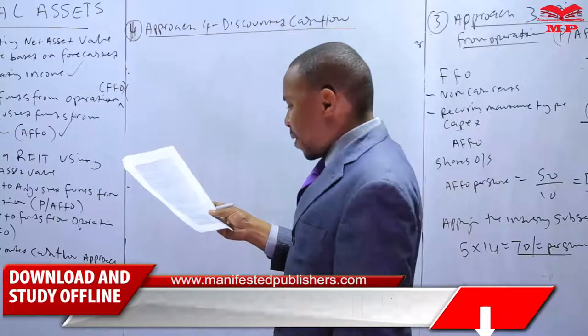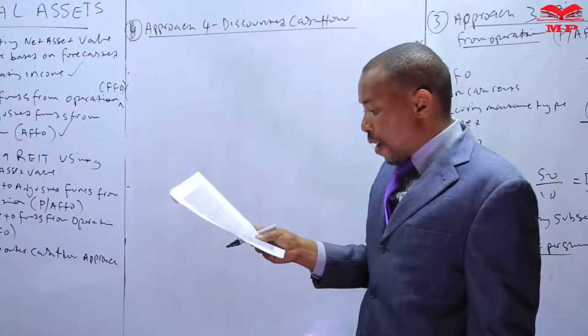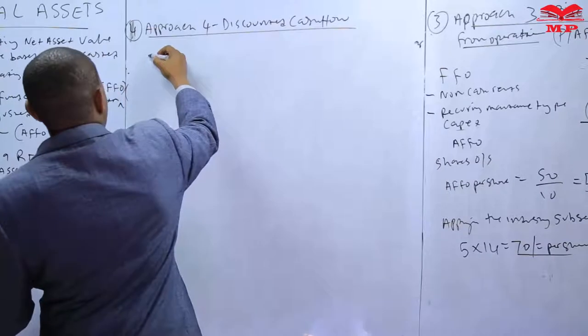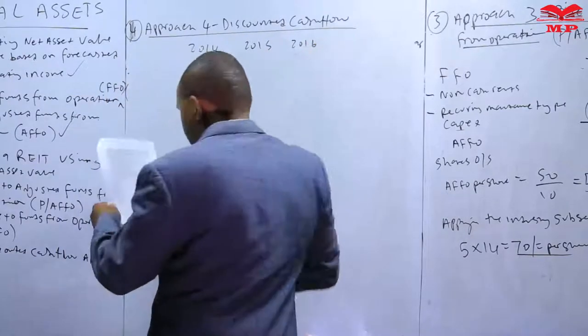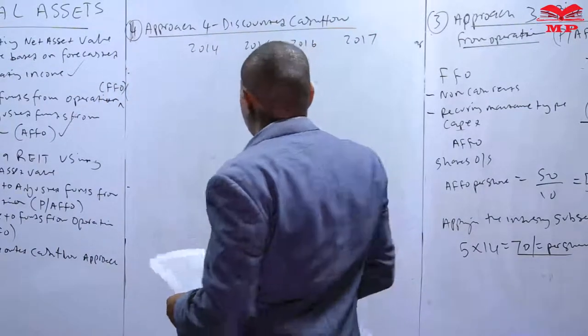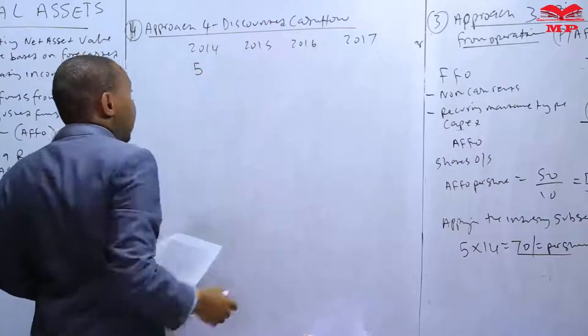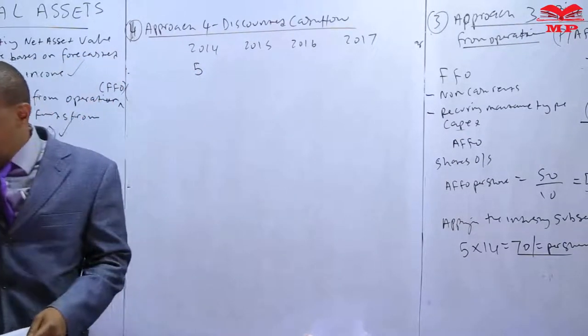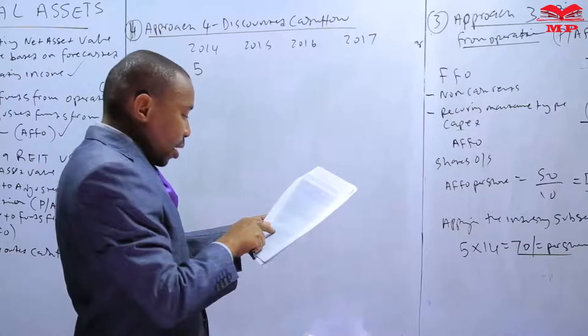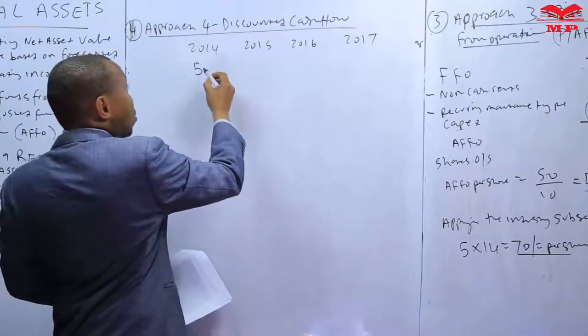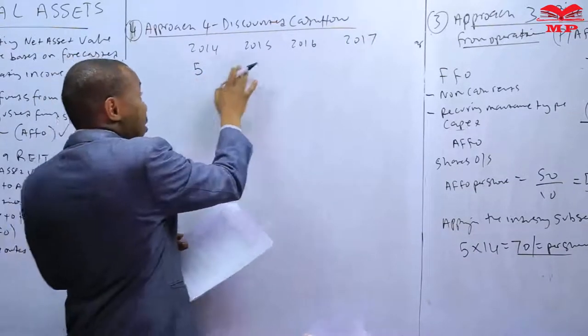We can see that we have the dividend per share in 2014 as 5 shillings and there is a growth rate that is going to be applied. Applying the growth rate, we have 2014, 2015, 2016, and 2017. We have the dividend per share for the first year, for year 5. We also need to identify the dividend growth rate. The dividend growth rate from 2015 to 2016 is 2%, so from here we are going to apply 2%.